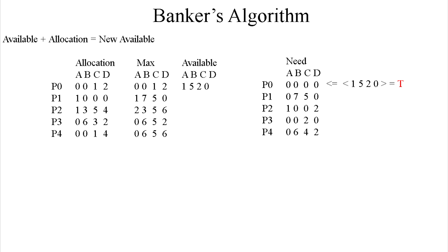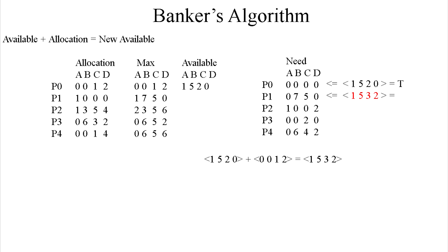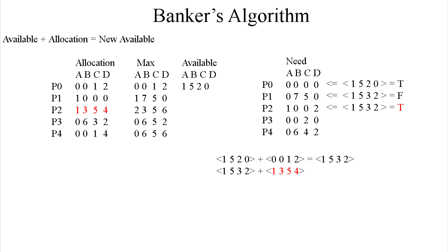We move the available matrix down and grab 0, 0, 1, 2 from the allocation matrix to get our new available. We take that new available and compare it to P1 to see if we can allocate the resources P1 requires — and that is in fact false, so P1 will not be allocated. We skip P1 and go to P2. When we compare 1, 5, 3, 2 with P2's need of 1, 0, 0, 2, we can obviously accommodate that.